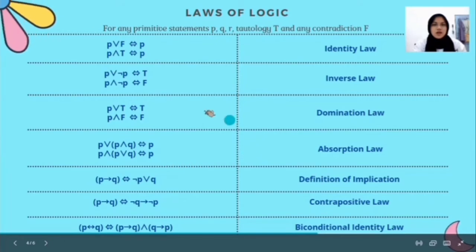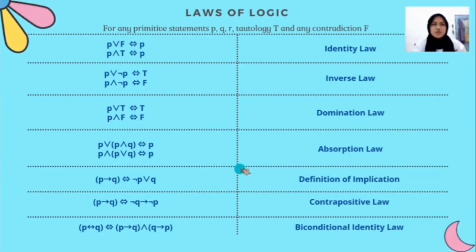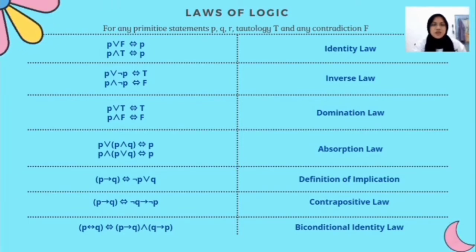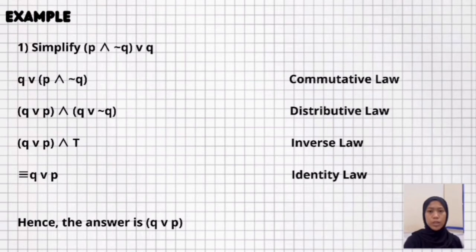These laws must be memorized and used wisely to simplify an argument. For the first example, simplify (P ∧ ¬Q) ∨ Q. Using commutative law: Q ∨ (P ∧ ¬Q). Then distributive law gives (Q ∨ P) ∧ (Q ∨ ¬Q). Using inverse law, Q ∨ ¬Q becomes T. So we have (Q ∨ P) ∧ T. Then identity law gives the final answer: Q ∨ P.